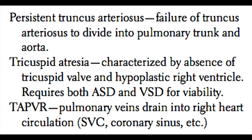Truncus arteriosus, or persistent truncus arteriosus, is the failure of the truncus arteriosus to divide into the pulmonary artery and the aorta, causing one large artery coming off both the right and left ventricle. Tricuspid atresia is characterized by the absence of the tricuspid valve and a hypoplastic right ventricle; these patients will require both an ASD and a VSD for viability. TAPVR is when the pulmonary veins drain into the right heart circulation, such as the SVC or the coronary sinus, and these patients also require an ASD for viability.